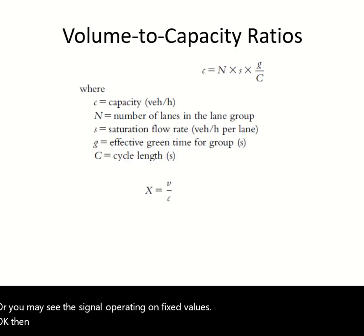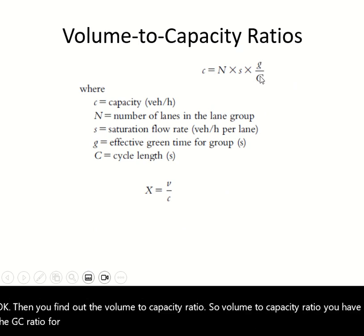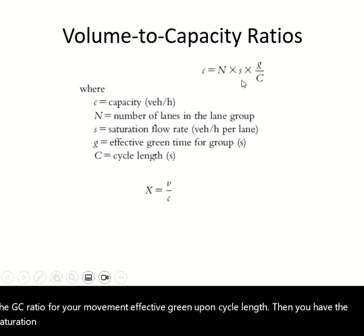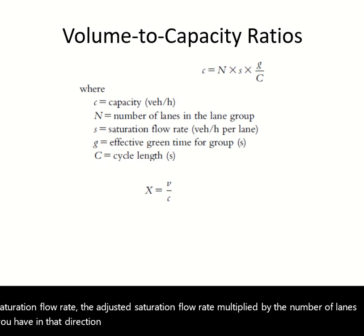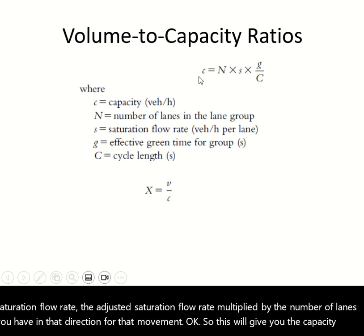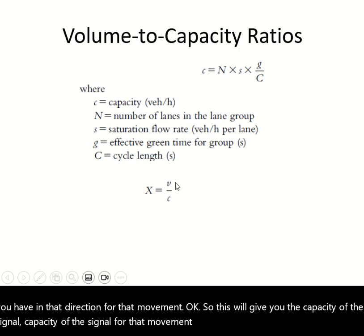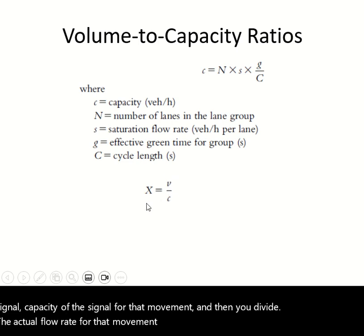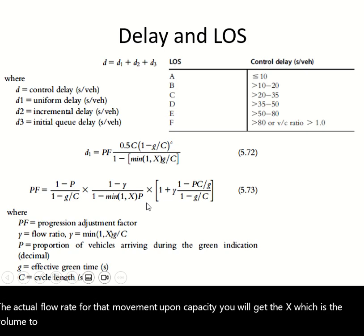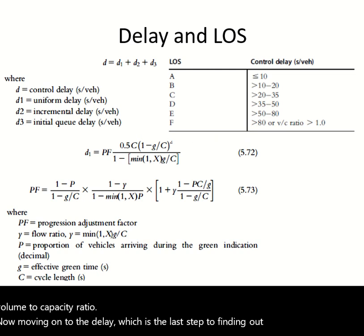Then you find out the volume-to-capacity ratio. You have the g/c ratio for your movement, the adjusted saturation flow rate multiplied by the number of lanes for that movement — this gives the capacity. Dividing the actual flow rate for that movement by the capacity gives X, the volume-to-capacity ratio. Moving on to delay, which is the last step in finding the level of service.